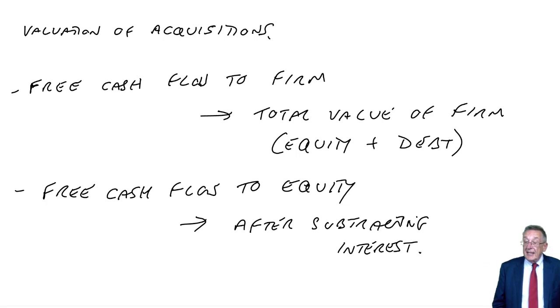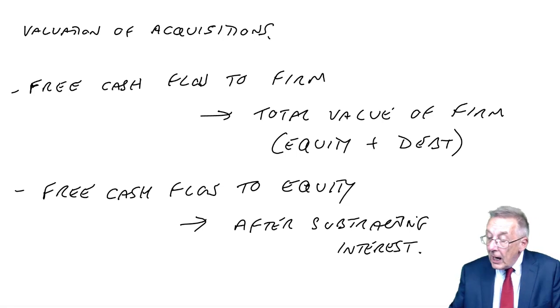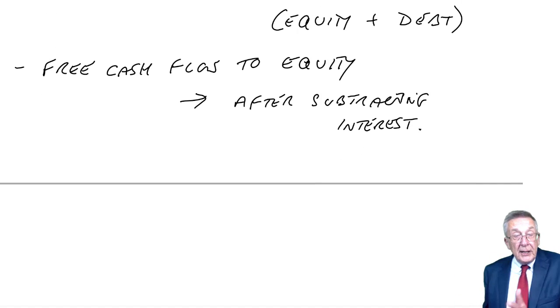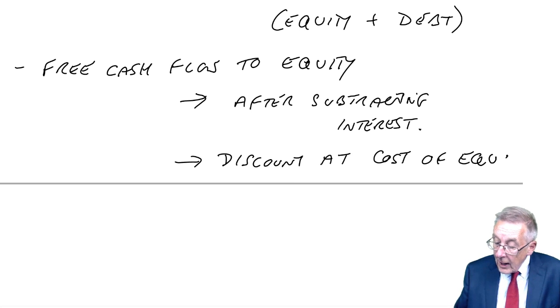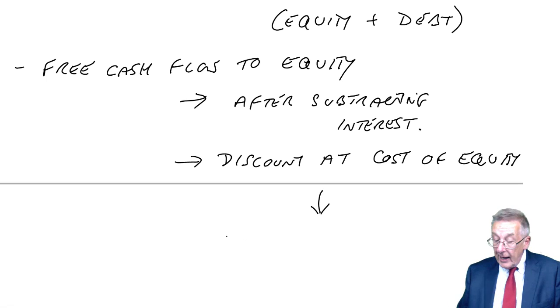I'll show you precisely how we get it in a minute, but we simply subtract the interest. You get your cash flows in exactly the normal way, but if you want the free cash flow just to the equity, then we need to subtract the interest. When we come to discount, we're only looking at flows to the equity, to the shareholders, and therefore we discount at the cost of equity. What we end up with is directly the market value of the equity.